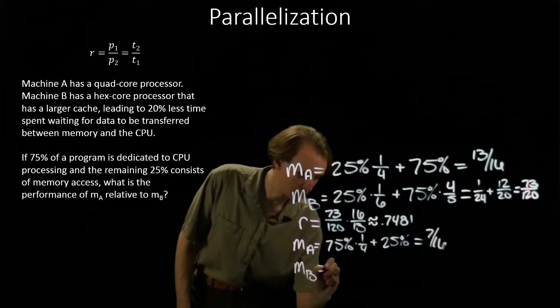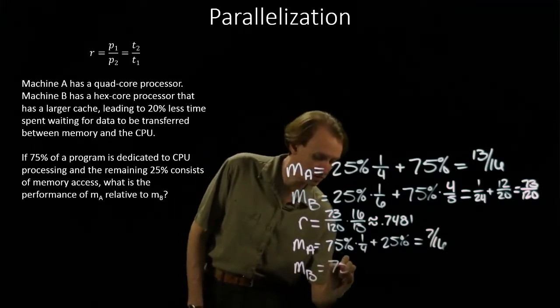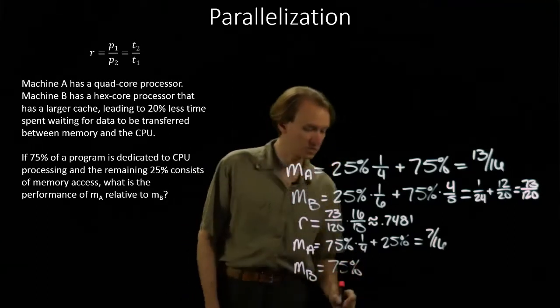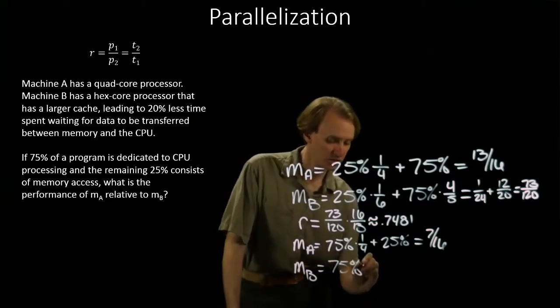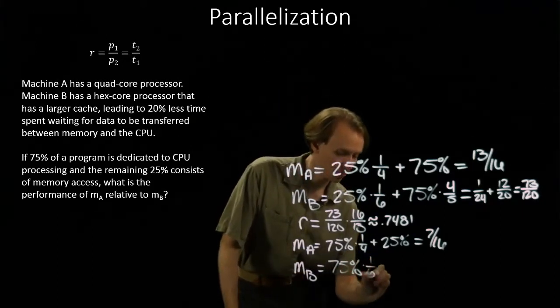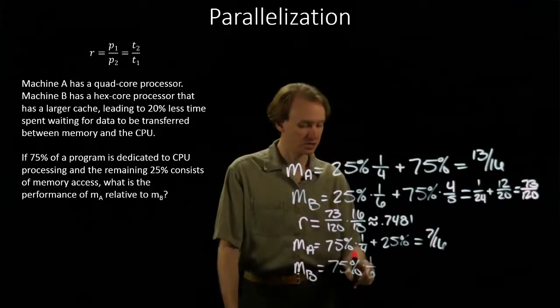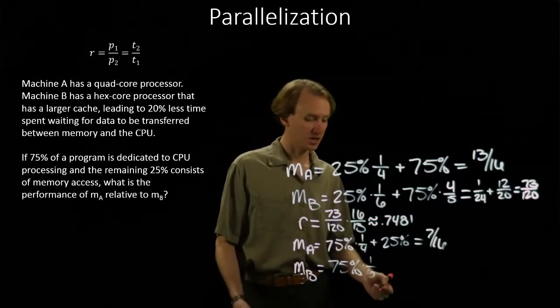And for machine B, still seventy-five percent of the operations are CPU operations, which take, which are parallelized, so that machine B only requires one-sixth as much time.